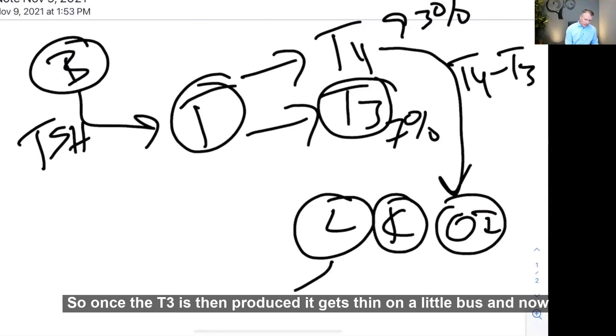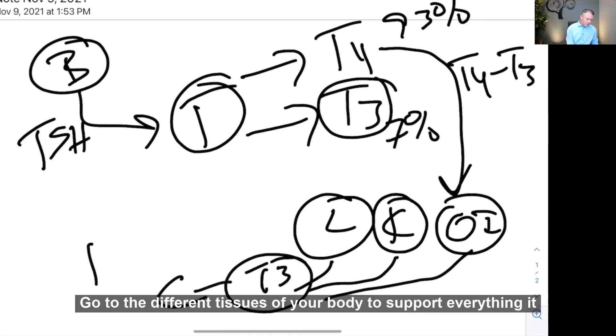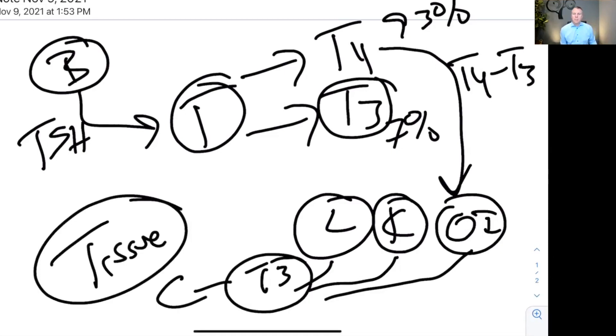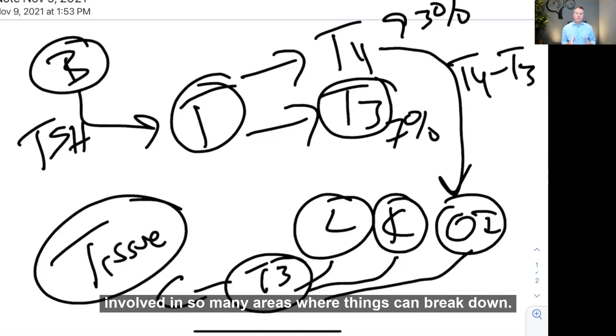So once the T3 is then produced, it gets on a little bus, and that little bus will go to the different tissues of your body to support everything it needs. So if we look at this right here, there are so many steps that are involved in so many areas where things can break down.